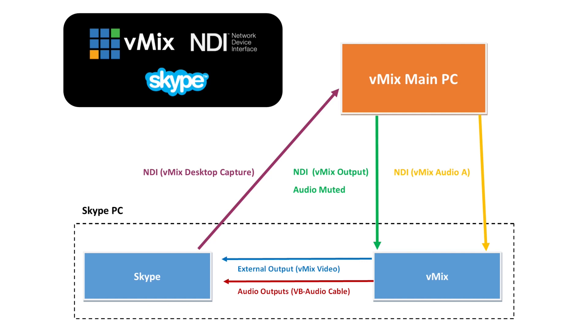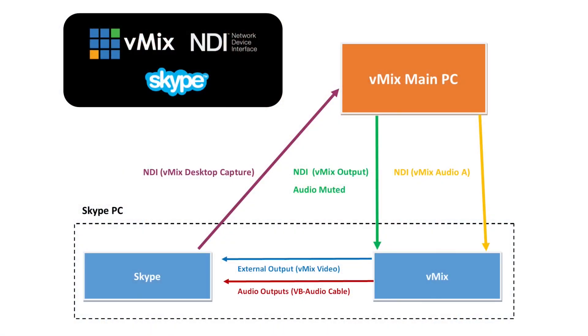Where it gets a little more complicated is the return feed. You could have the vMix main PC send its output, or use a webcam as a return feed to the Skype caller — just turn on the webcam on the Skype PC facing toward the host. The challenge with that approach is audio feedback. Depending on how you're monitoring audio — earphones or speakers — you don't want the Skype caller to hear themselves, as that can be quite disorienting.